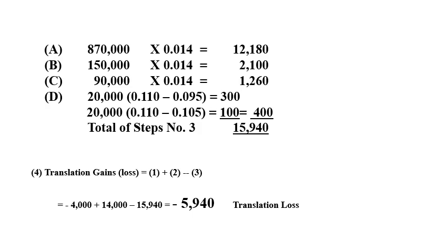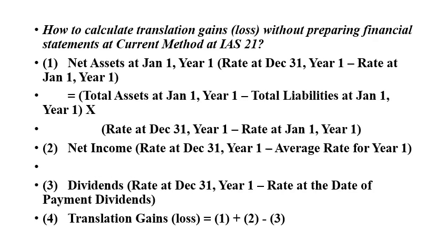The total of step three is 15,940. This gives the translation gain or loss.